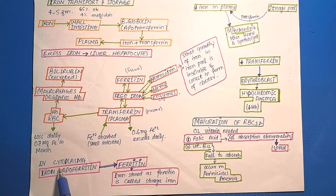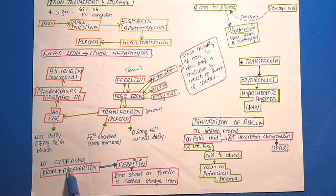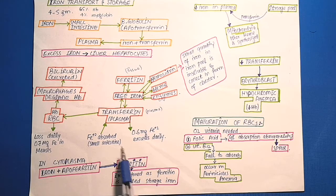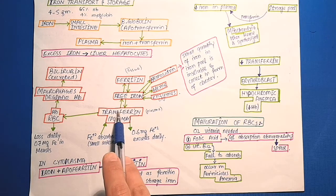In the cytoplasm, iron combines with apotransferrin to form ferritin. The ferritin can contain small or large amounts of iron. The iron stored in form of ferritin is called storage iron. So iron is absorbed and transferred to the plasma and then to the tissue.